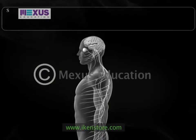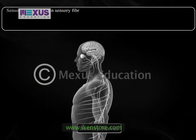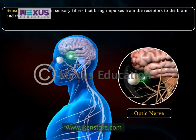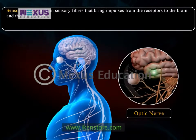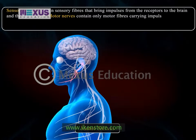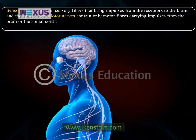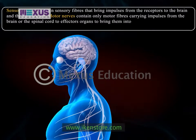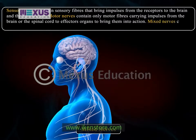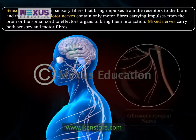The first type is a sensory nerve, which contains sensory fibers that bring impulses from the receptors to the brain and the spinal cord. For example, the optic nerve arising from the eyes and ending in the brain. The second type is a motor nerve, which contains only motor fibers carrying impulses from the brain or the spinal cord to effector organs to bring them into action. For example, a facial nerve arising from the brain. The third type of nerve is a mixed nerve, which carries both sensory and motor fibers. For example, a glossopharyngeal nerve.